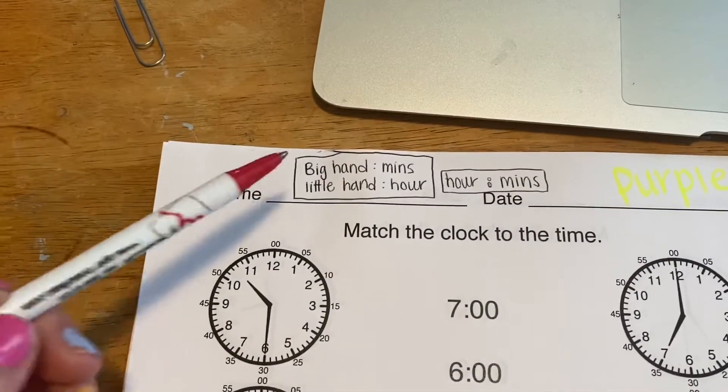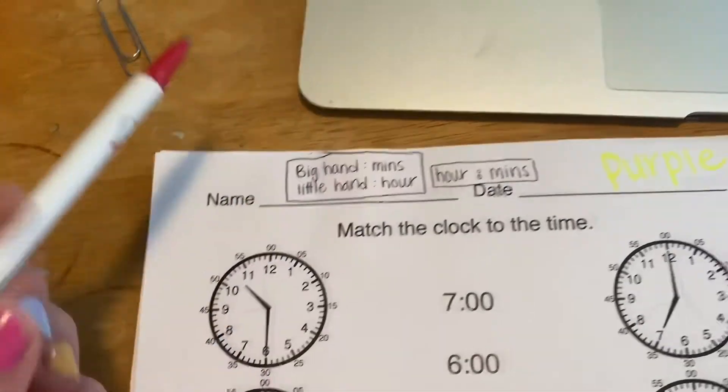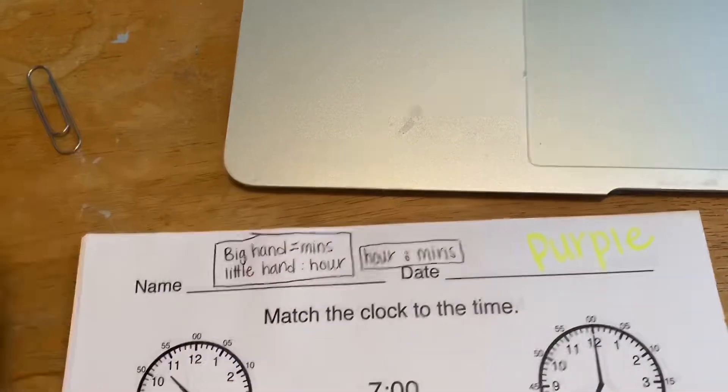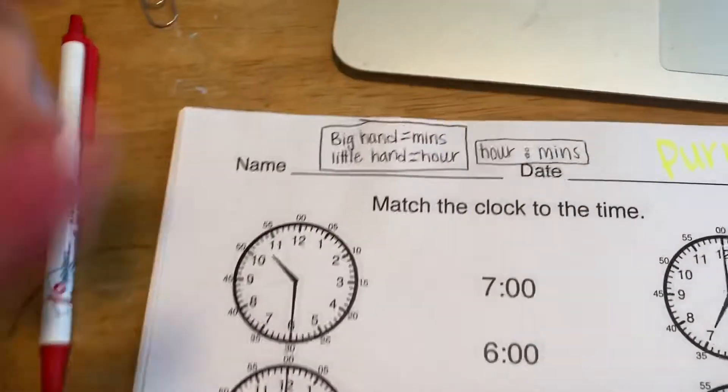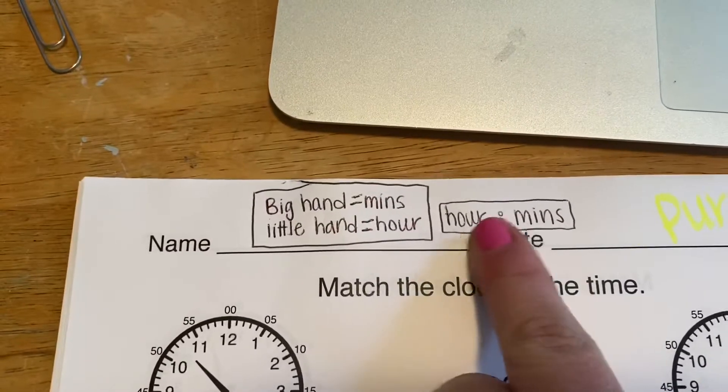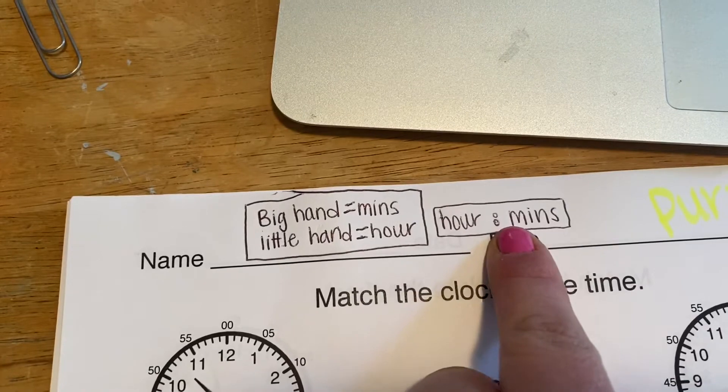All right, for the first thing I want you to do, I want you to write big hand equals minutes, little hand equals hour. And then right here, I want you to write hour colon minutes.